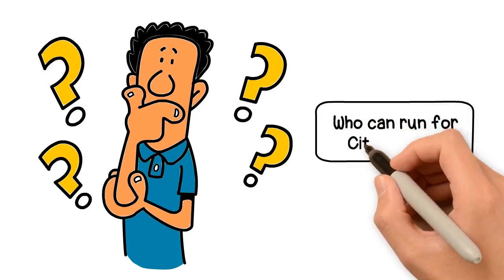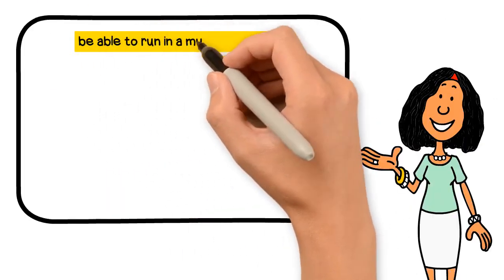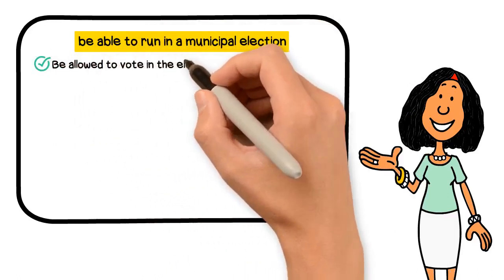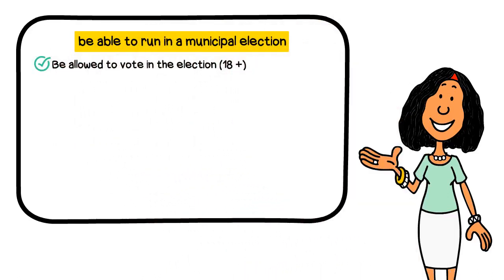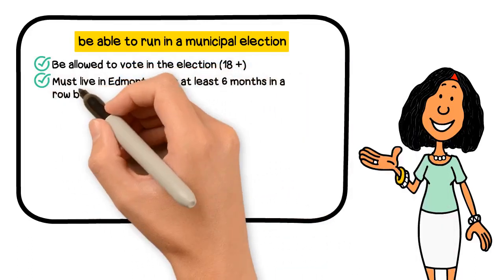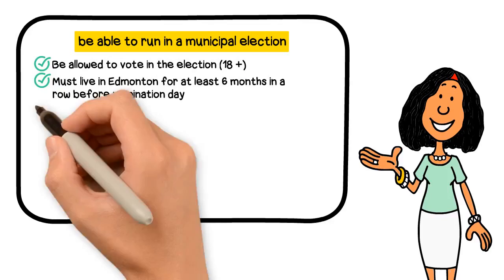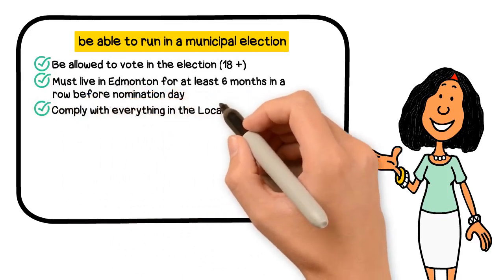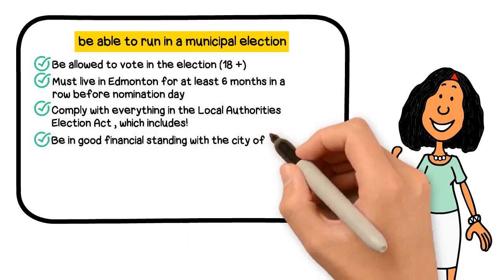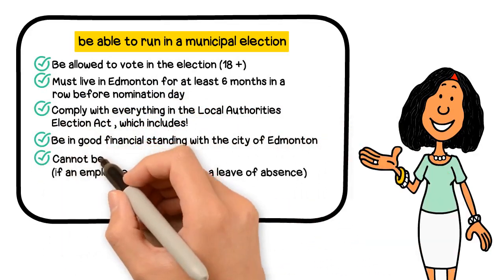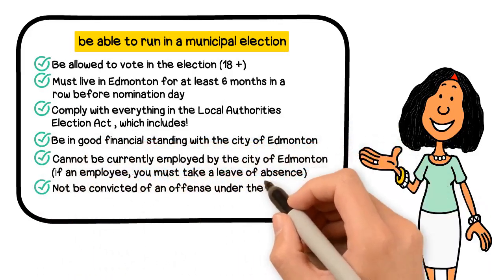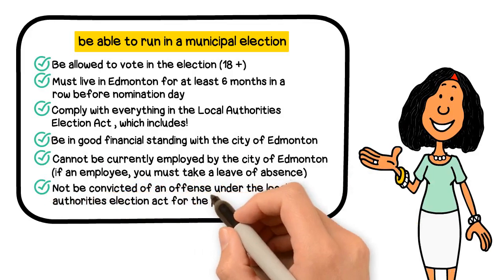Who can run for city council? In order to be able to run in a municipal election, a person must be allowed to vote in that election, so they have to be 18 years old on that date. They must live in Edmonton for at least 6 months in a row before nomination day. They must comply with everything in the Local Authorities Election Act, which includes being in good financial standing with the city of Edmonton, not currently being employed by the city of Edmonton, and not being convicted of an offence under the Local Authorities Election Act for the previous 10 years.